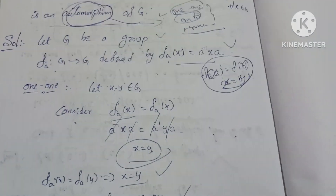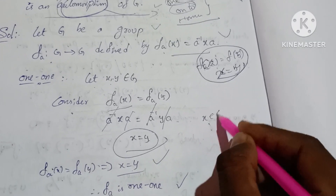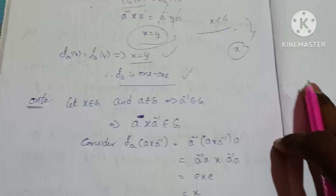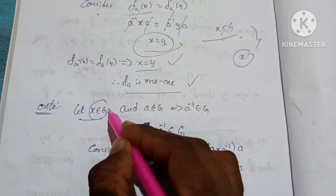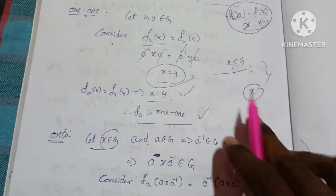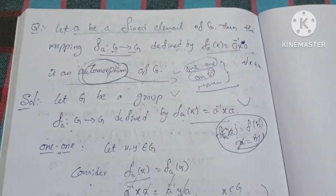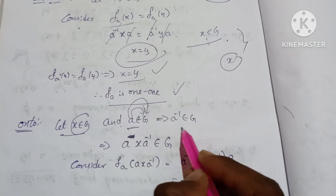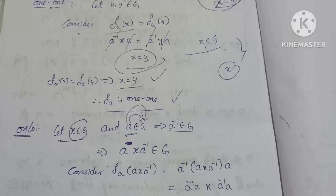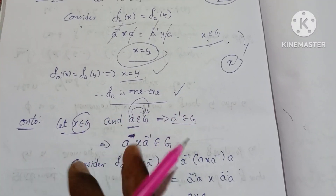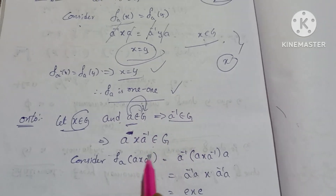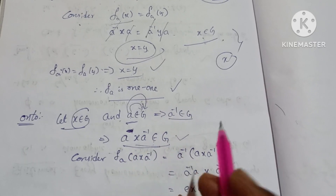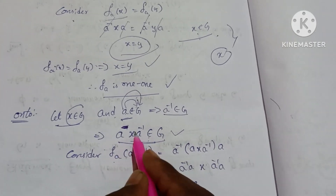The second condition: we need to show onto. Let x belong to G. We have to show that there exists an element whose image is x. Since a is a fixed element of G, a inverse also belongs to G. Therefore a x a inverse belongs to G. Consider f_a of a x a inverse.